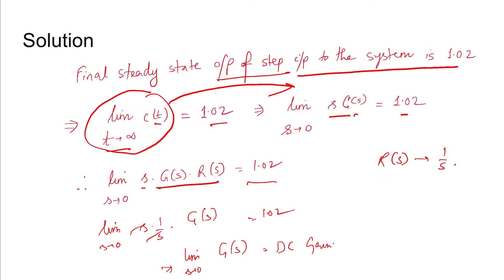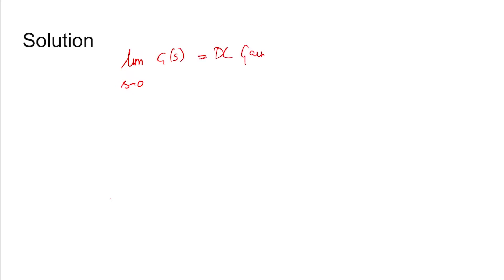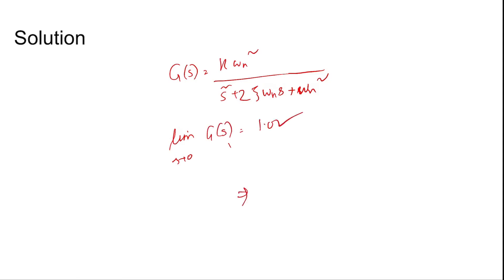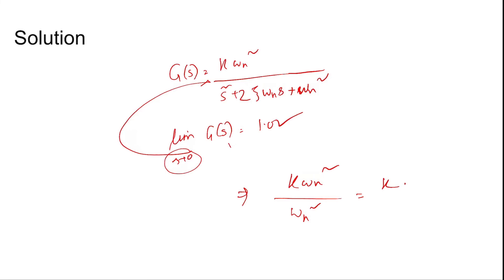The DC gain is obtained by putting s→0 in G(s), giving 1.02. For the given transfer function kωₙ²/(s² + 2ζωₙs + ωₙ²), taking the limit as s→0 yields kωₙ²/ωₙ² = k. Therefore k = 1.02. With ζ = 0.5 and ωₙ = 10 radians per second, the coefficient 2ζωₙ = 2 × 0.5 × 10 = 10, and ωₙ² = 100.